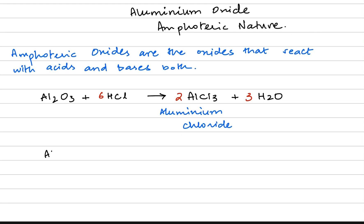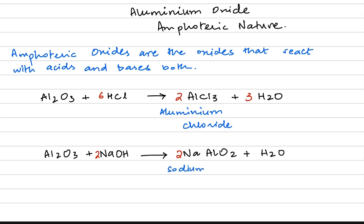When we react aluminium oxide with concentrated sodium hydroxide we get another salt known as sodium aluminate. Sodium aluminate has a chemical formula of NaAlO₂. When we balance this equation we get two moles of sodium aluminate for every one mole of aluminium oxide. Sodium aluminate is produced when aluminium oxide behaves like an acid, neutralizing an alkali.